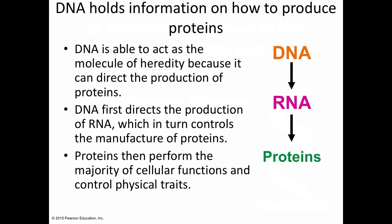When we talk about DNA replication, one option is replicating the entire DNA molecule. But if a cell is just trying to make a particular protein, we only need the part of the DNA that codes for that protein. This leads us to the central dogma of biology: DNA directs the production of RNA, and then RNA is ultimately responsible for the manufacture of proteins. The flow goes from DNA to RNA to proteins, and proteins control all those physical traits.